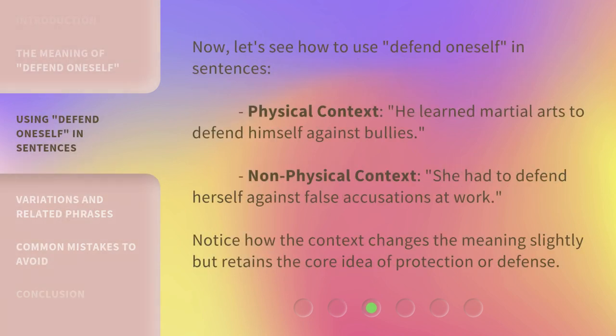Now, let's see how to use Defend Oneself in sentences. Physical context: He learned martial arts to defend himself against bullies. Non-physical context: She had to defend herself against false accusations at work. Notice how the context changes the meaning slightly but retains the core idea of protection or defense.